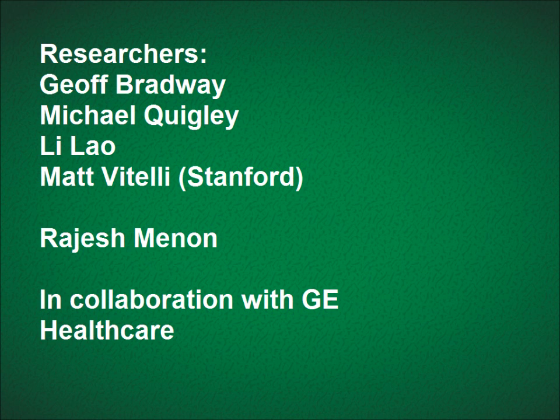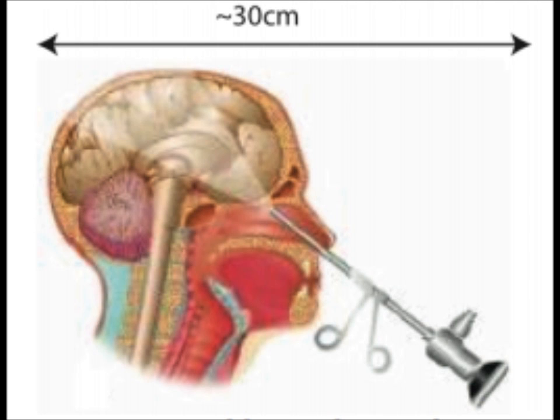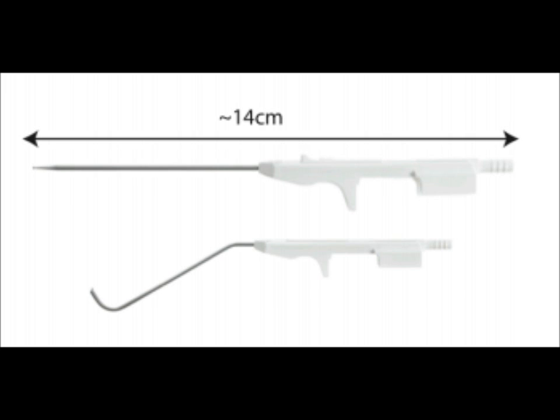In this project, we are interested in tracking the tip of a surgical instrument, such as an aspirator, within the volume of a human head. The volume of interest is approximately 30 cm by 30 cm by 30 cm. There are two relevant surgical instruments, and these are approximately 14 cm long. The goal is to track the tip of the instrument with an XYZ resolution of less than 1 mm.